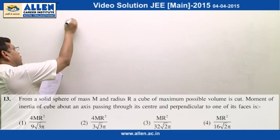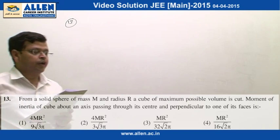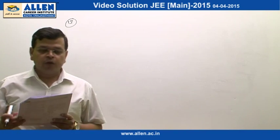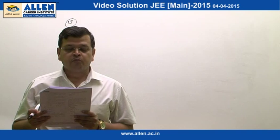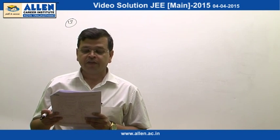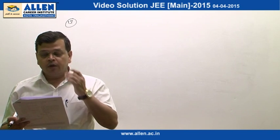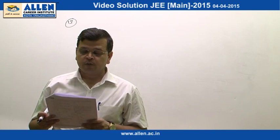Question number 30. In this question, it is given that we have to take a cube of maximum possible volume out of a given sphere and we have to find the moment of inertia of the cube about an axis passing through the center of the cube and perpendicular to one of its faces.